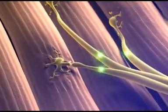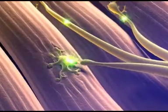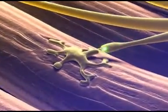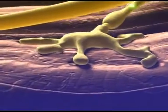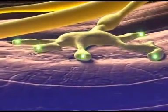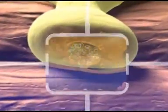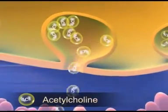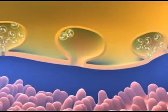Contraction of voluntary muscle fibers is a complex process which starts with the arrival of nerve impulses at the terminals of the nerves at a special site known as the neuromuscular junction. The impulses cause the release from these nerve terminals of tiny packets of acetylcholine, a neurotransmitter chemical.